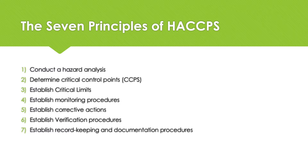Now let's go through the seven principles of HACCP. Principle one: conduct a hazard analysis. Principle two: determine the critical control points, or CCPs. Principle three: establish critical limits. Principle four: establish a system to monitor control of the CCP. Principle five: establish the corrective action to be taken when monitoring indicates that a particular CCP is not under control. Principle six: establish procedures for verification to confirm that the HACCP system is working effectively. Principle seven: establish documentation concerning all procedures and records appropriate to these principles and their application.